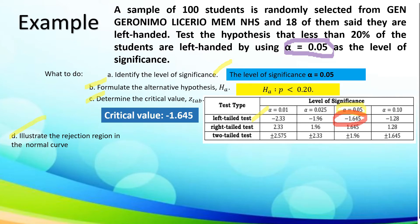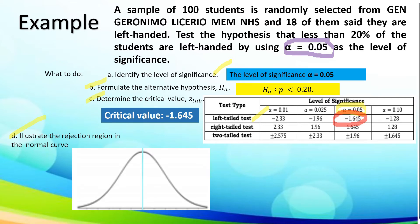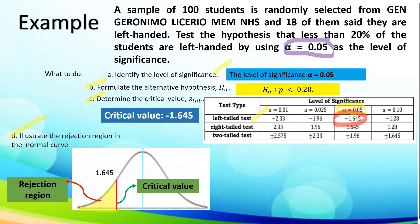To illustrate the rejection region in the normal curve, we are going to use the standard normal curve figure, showing the critical value from the left side, which is negative 1.645, and the shaded region, which is our rejection region.